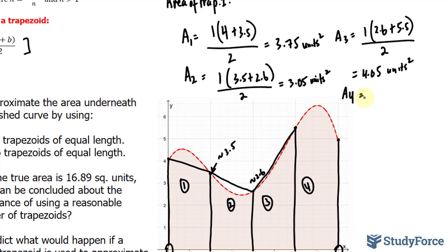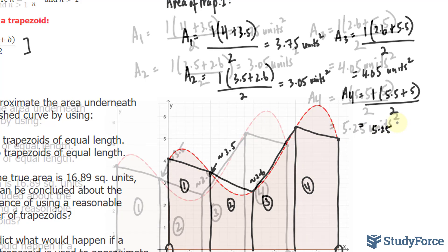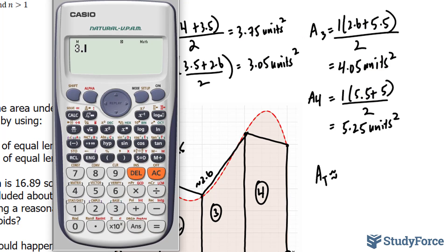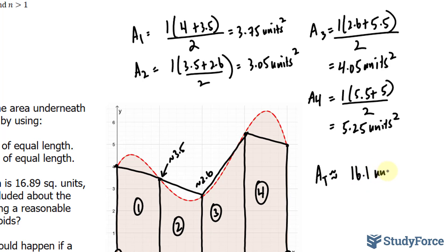And finally, the area of number 4. We'll connect it from here to here. That should be the same as 5.5. So, 1 times 5.5 plus—that is 5—all divided by 2. So, 10.5 divided by 2 is 5.25. So, now that we've found each individual area, we can find our total area. So, I'll write down A sub T is approximately equal to—and to find this, we simply sum up each of these values. So, let's use our calculator. 3.75 plus 3.05 plus 4.05 plus 5.25. And we end up with an area that is roughly 16.1 square units.